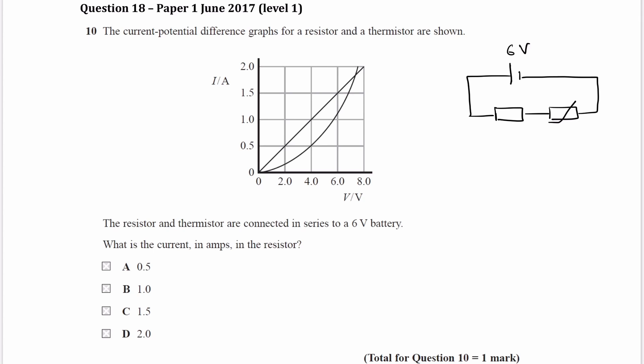So current will remain the same in both components. Whatever current you have in one component must be the same as the current in the other component. And voltage would split. And the two voltages across both components would add up to make 6 volts.